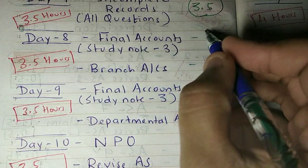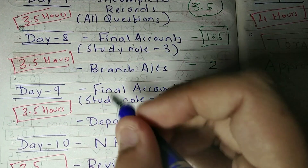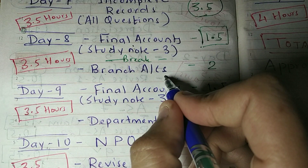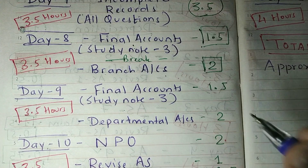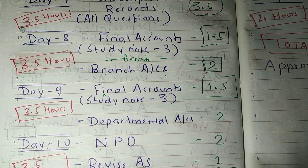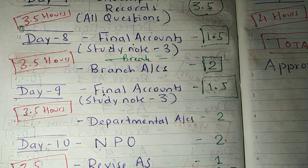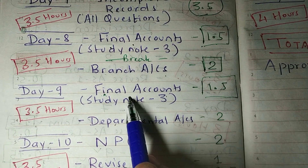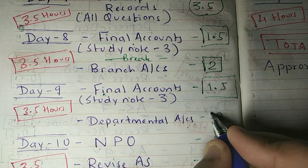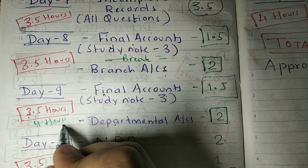On Day 8 and Day 9, you will study Final Accounts for 1.5 to 2 hours each day. After that, you have to study Departmental Accounts, which will take 2 hours. So for these days you can expect to spend 3.5 to a maximum of 4 hours.